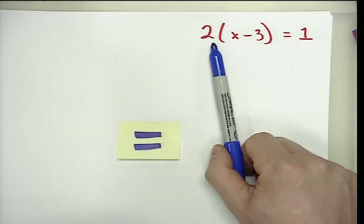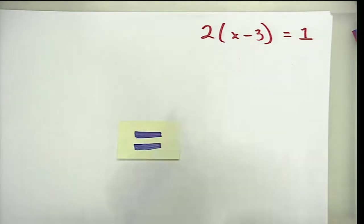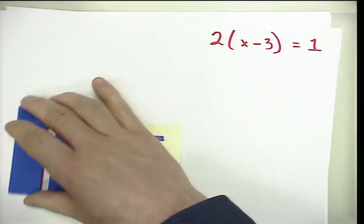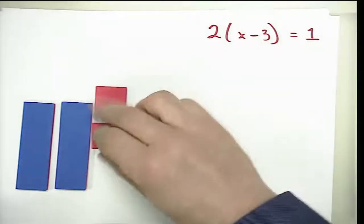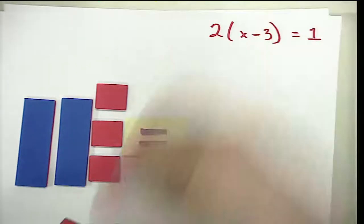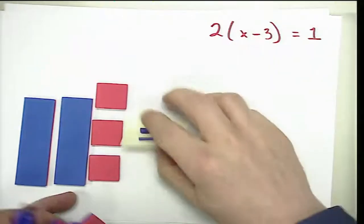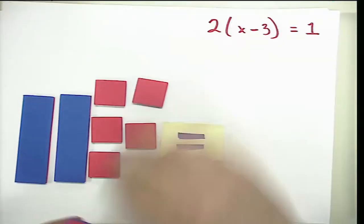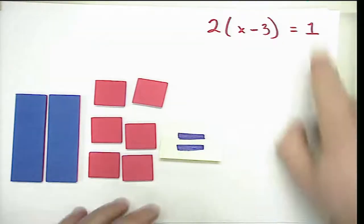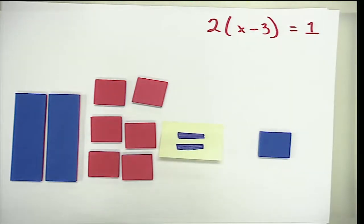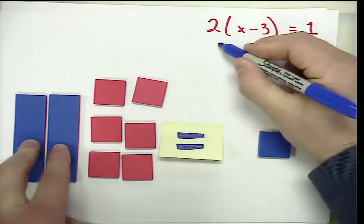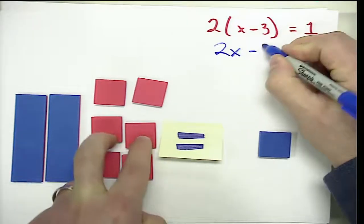When we interpret the distributive property, we read this as two groups of X minus three — or two groups of X and two groups of negative three. On the other side there's nothing to simplify, so the right expression is simply positive one. After applying the distributive property we get two X minus six is equal to one.